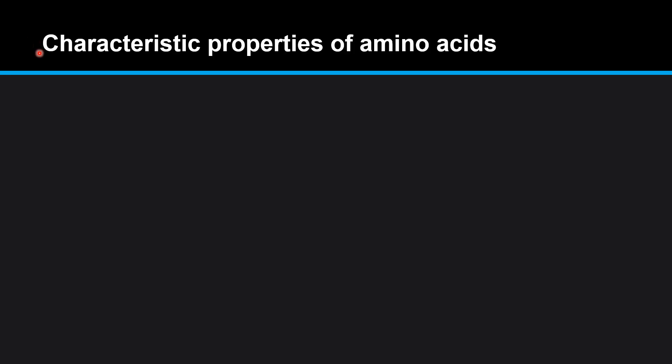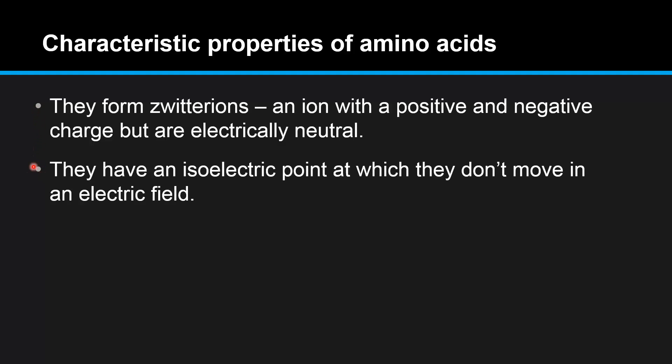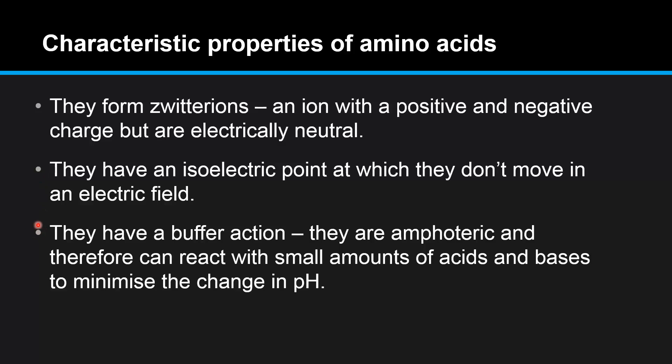In this video we'll look at the characteristic properties of amino acids. They form zwitterions, an ion with a positive and negative charge but are electrically neutral. They have an isoelectric point at which they don't move in an electric field. They have a buffer action. They are amphoteric, therefore they can react with small amounts of acids and bases to minimize the change in pH.